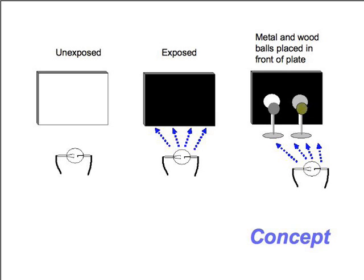First, some basic concepts. A specialized bulb called a cathode ray tube showers energy called gamma radiation. The energy it emits is not visible; however, a specially prepared plate can be exposed with this energy, and as you can see in the picture, it turns the plate from white to black. If you put objects in front of the plate and shower it with the correct amount of energy, you can distinguish between certain types of objects. For example, in the picture, you see the metal ball left a shadow.